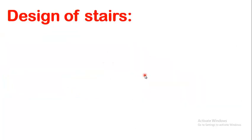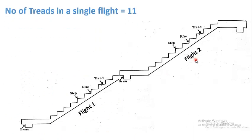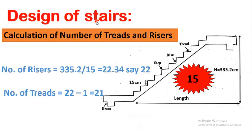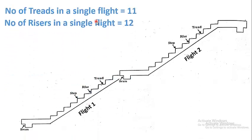To solve this, we divide the whole stair into two parts. As you can see, we have divided it into flight number one and flight number two. Dividing 22 by 2, we get 11 threads and 12 risers in each single flight. As you can see, 1, 2, 3 up to 11 — these are the threads — and the riser count is one more than the number of threads. A landing has been provided between the two flights.